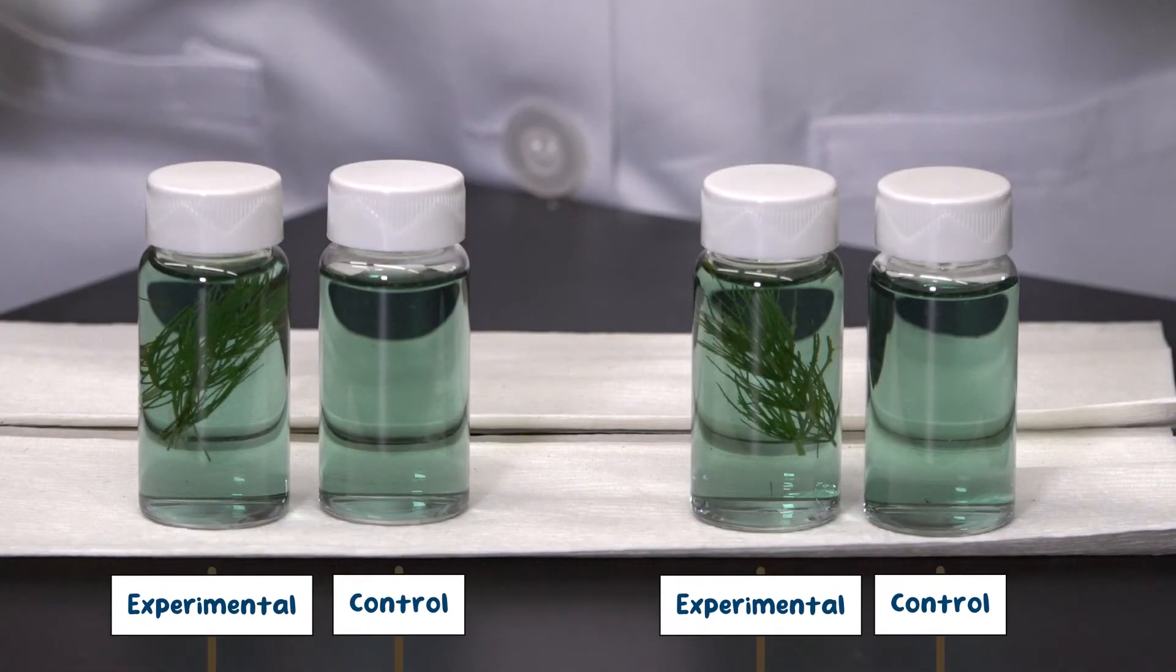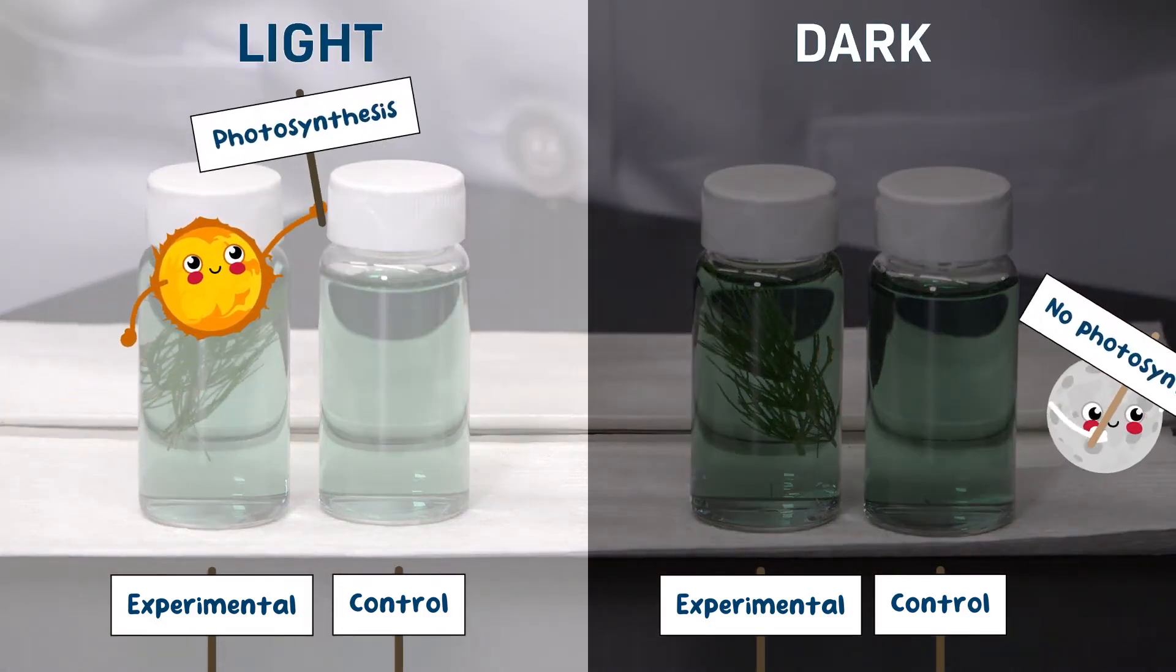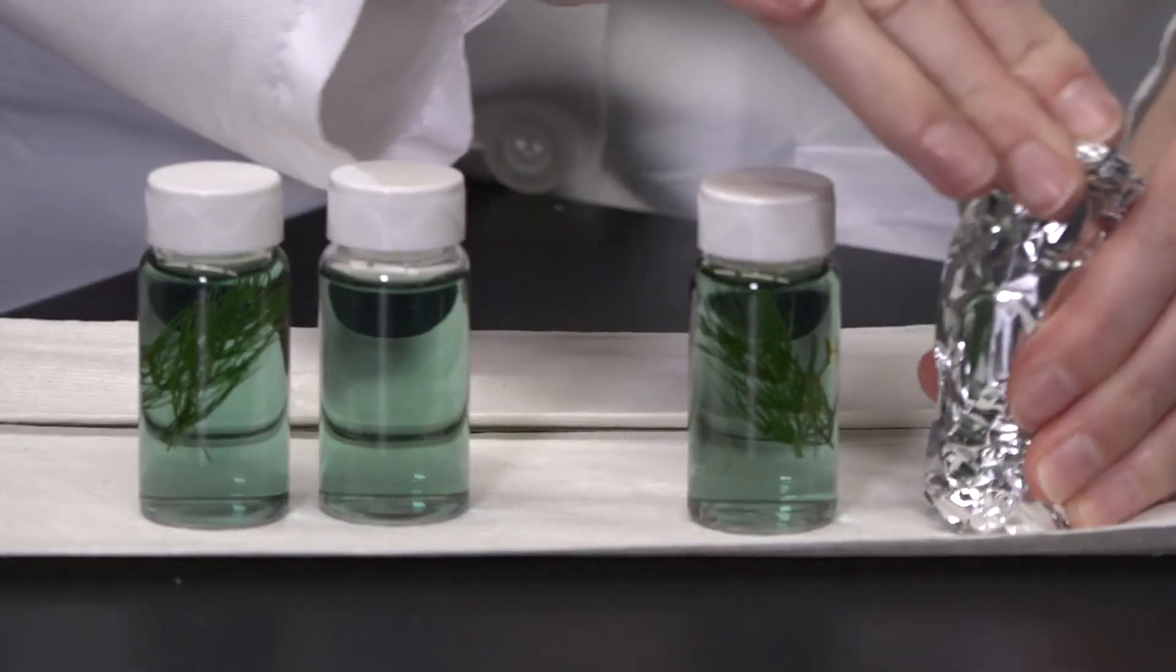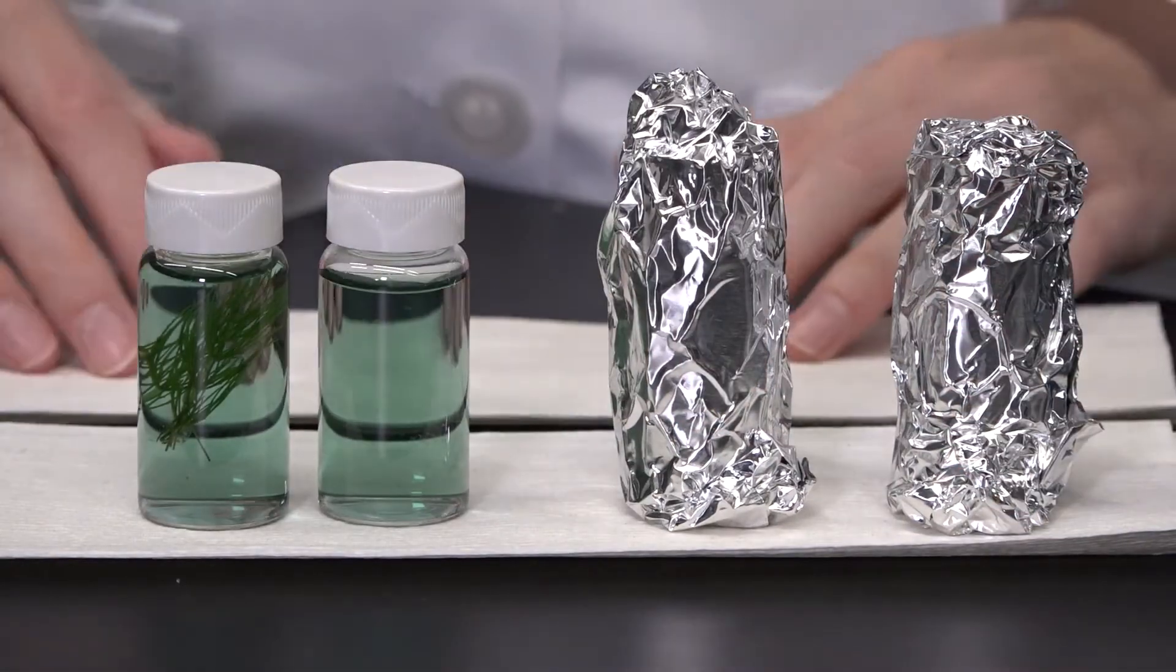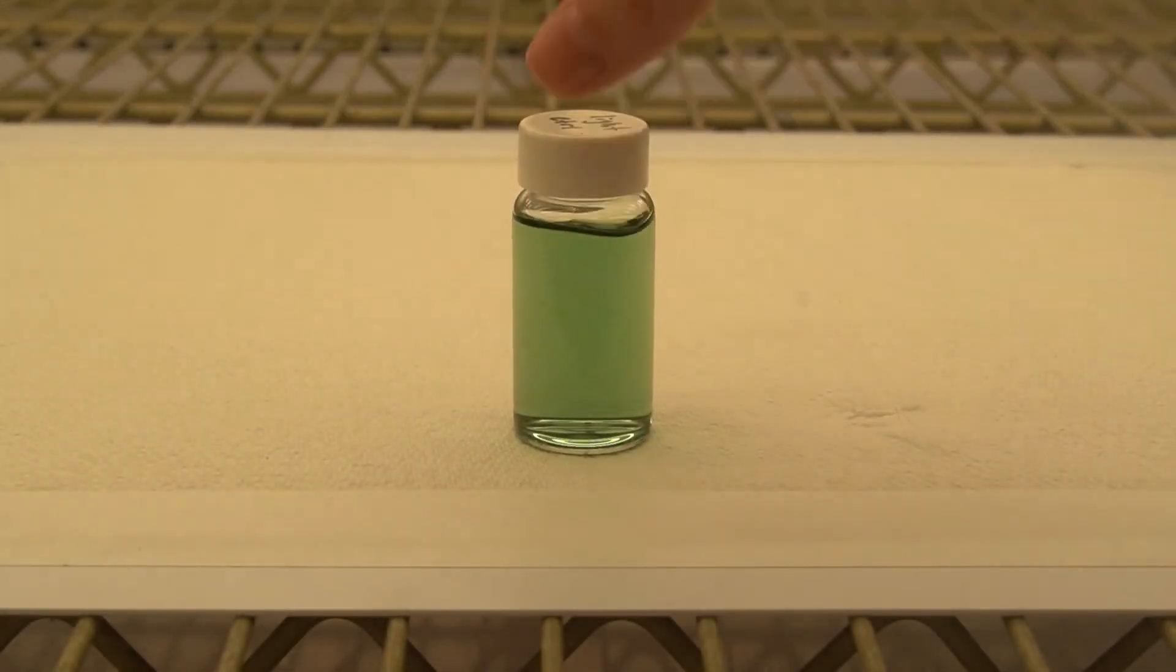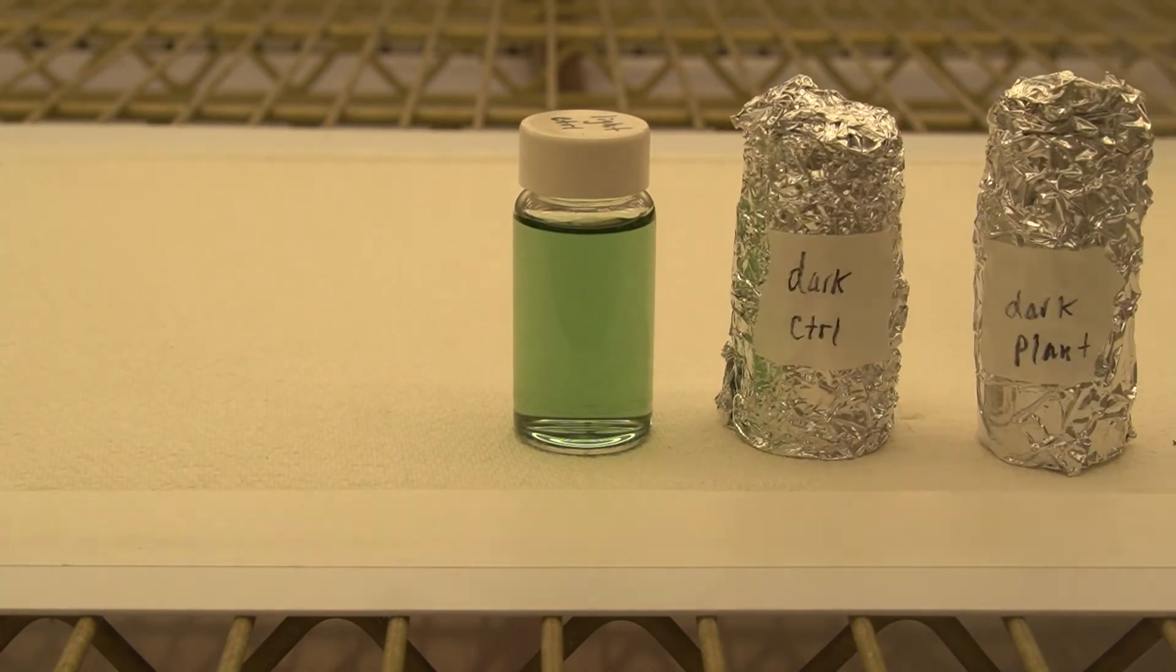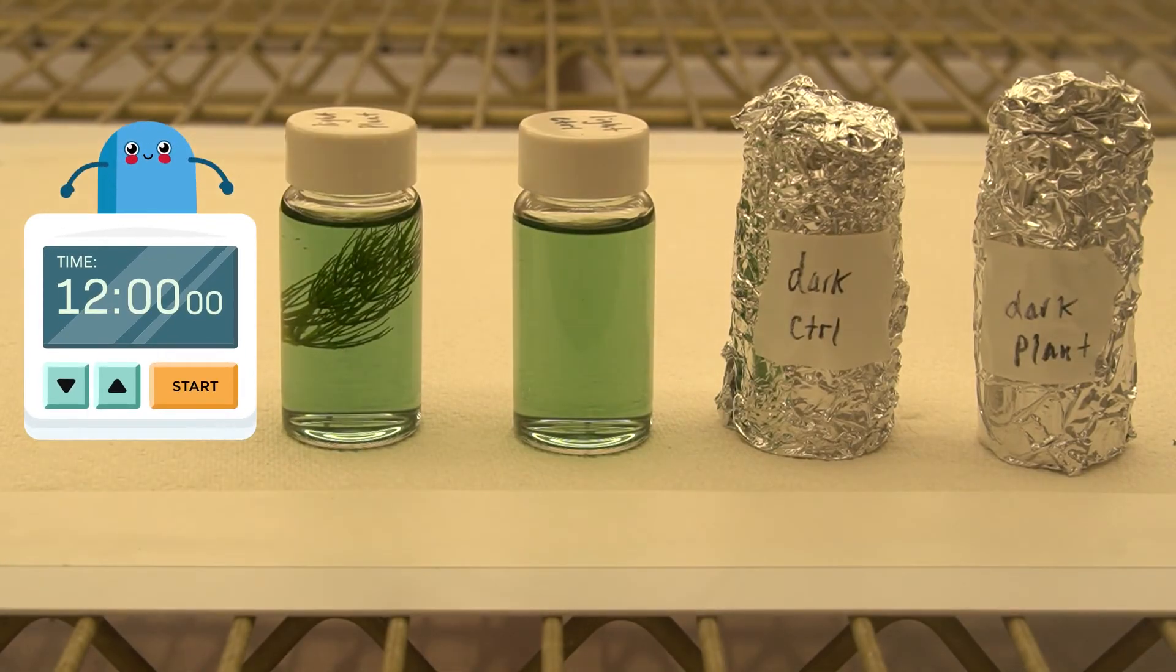The experimental treatments are light and dark. So one plant vial will be doing photosynthesis, one will not. To ensure no light can get through to the dark treatment, let's wrap one plant vial and one empty vial in tin foil. Then put them all near a bright light source. We want to keep the dark vials close by so they experience the same conditions, such as temperature, as the light vials. We're going to leave them here for 12 hours.